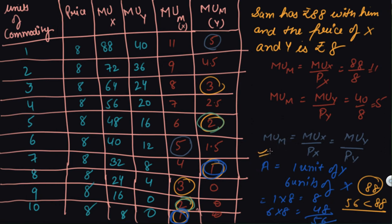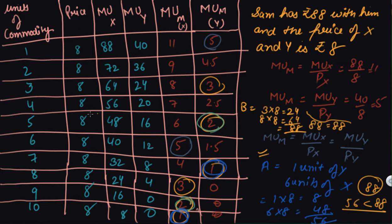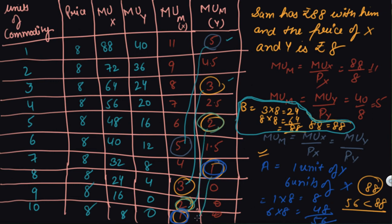Taking point B, the consumer buys three units of Y and eight units of X. Three units of Y costs 3×8 = 24 rupees and eight units of X costs 8×8 = 64 rupees, totaling rupees 88. Since 88 equals 88, the entire budget is utilized. This is the point of equilibrium where the full income is spent and maximum satisfaction is achieved.